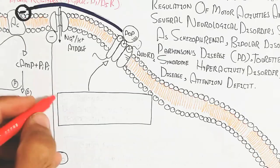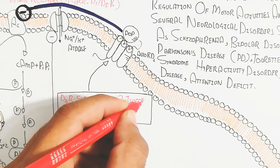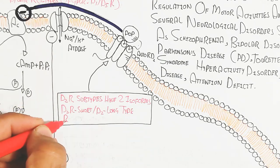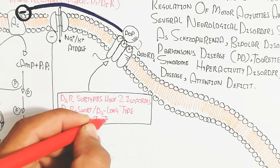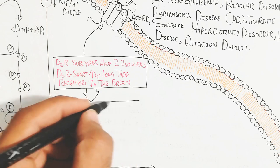The D2 dopamine receptor inhibits the adenylate cyclase activity. These D2 receptor subtypes have two isoforms: D2 receptor short and long type receptors in the brain.